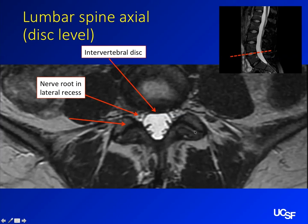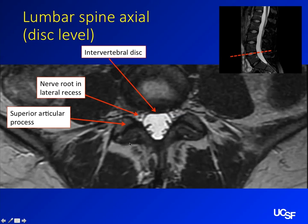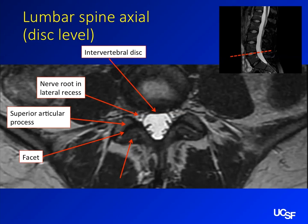At the level of the facets you have a joint and two articular pillars. The one from the level below is the superior articular process of the level below; the one from above is the inferior articular process. You can think about this during an LP — the posterior elements point down toward the floor and gently slope back, which is why when doing an LP you aim a little bit up toward the patient's head or umbilicus to get between those posterior elements.